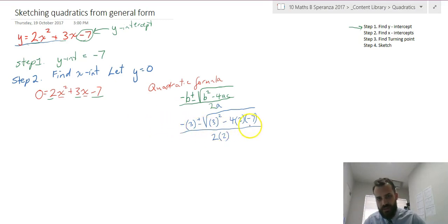I'm going to do everything just underneath the brackets, a little bit of working off to the side here. 3 squared is 9, minus 4 times 2 times negative 7. That's 8 times 7, that's 56, but it's positive 56. And the square root of 9 plus 56 is 65.